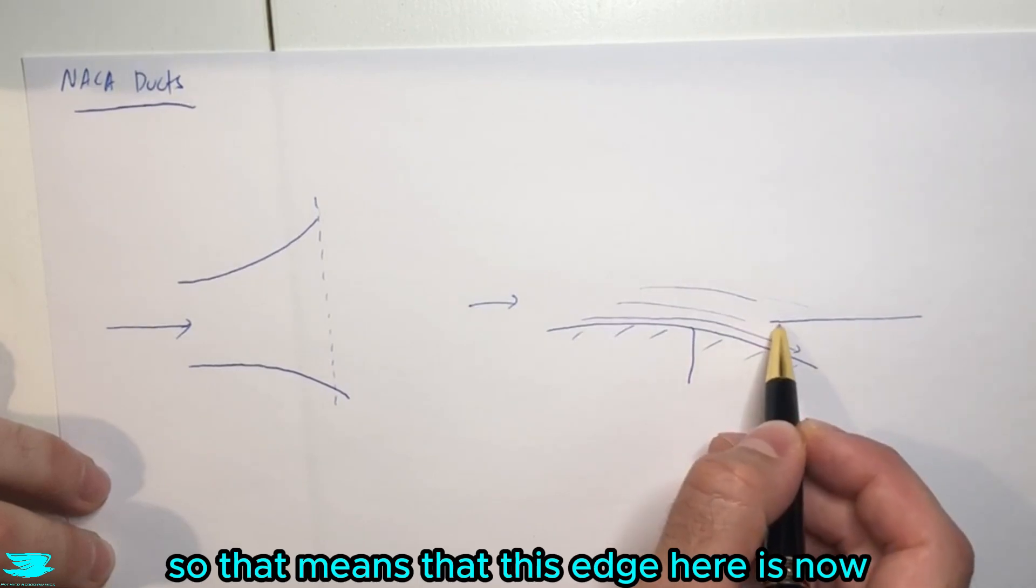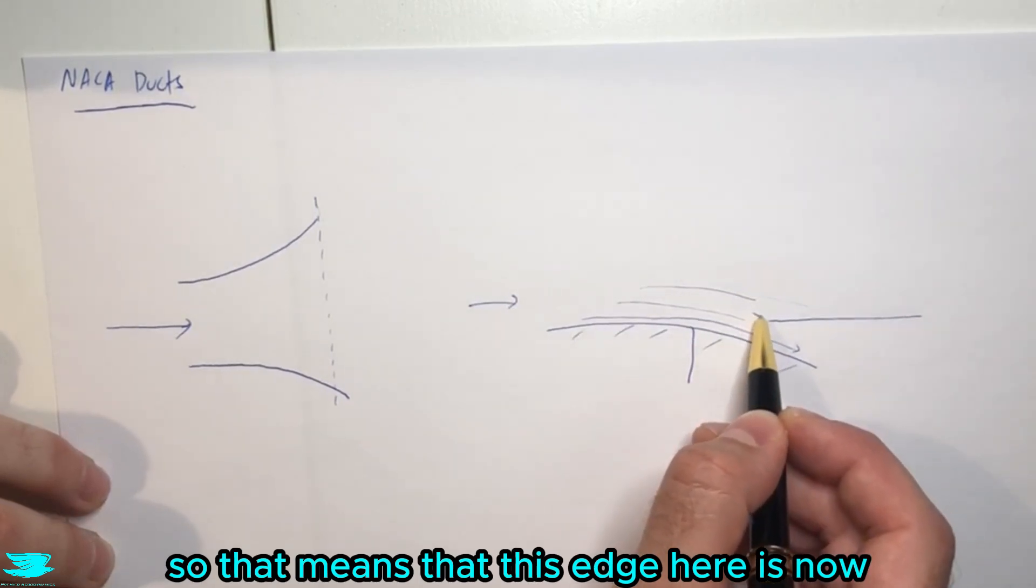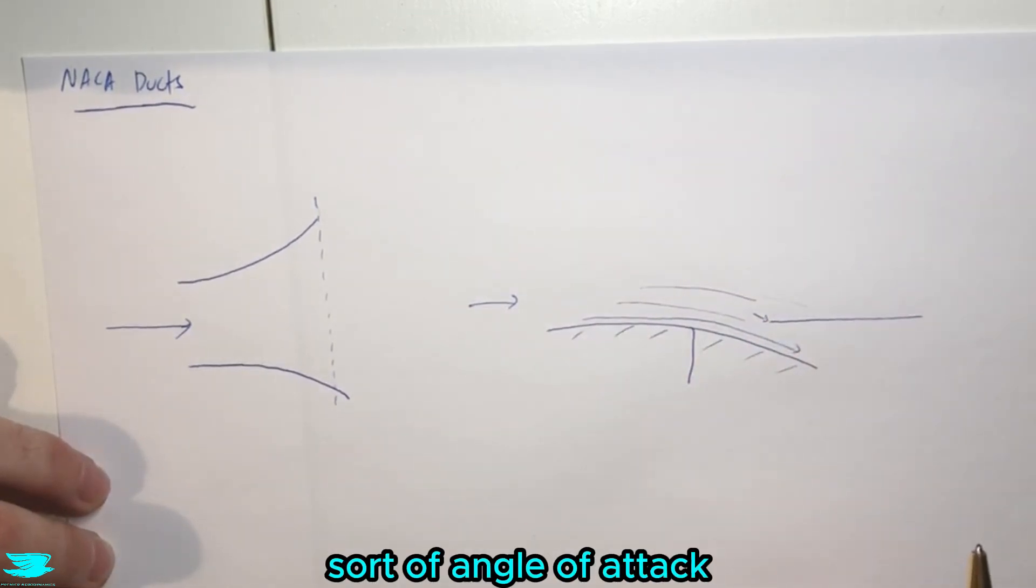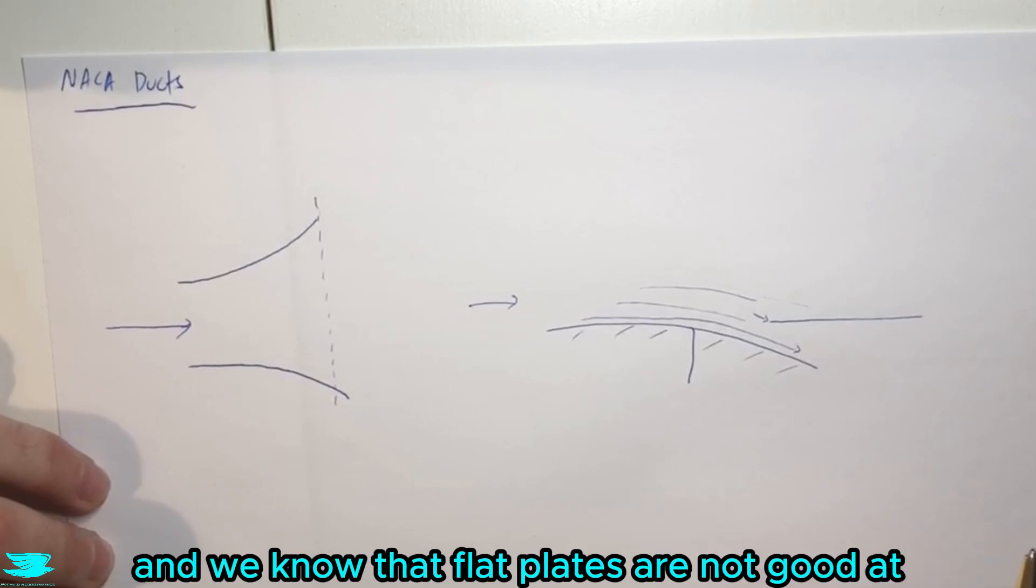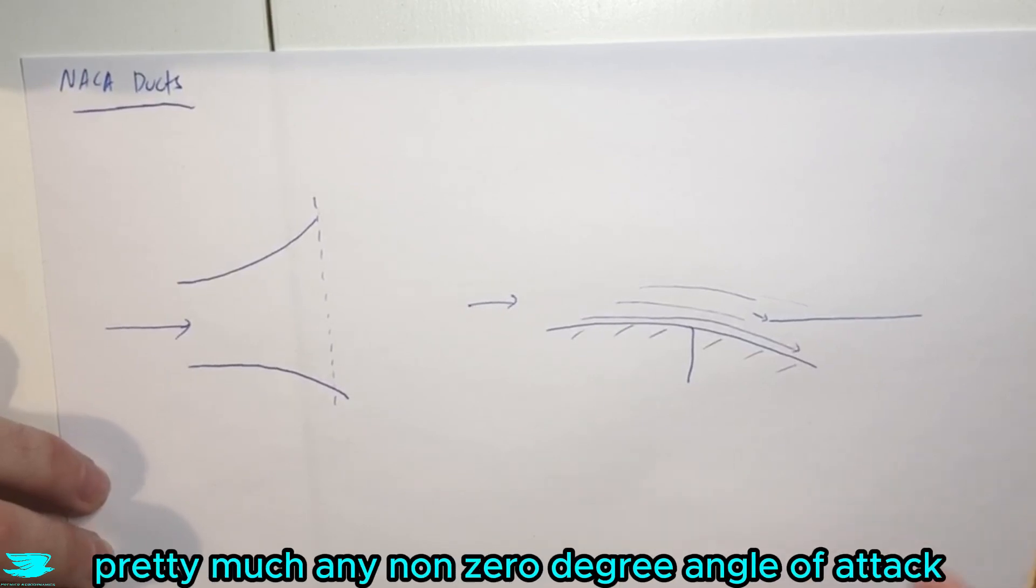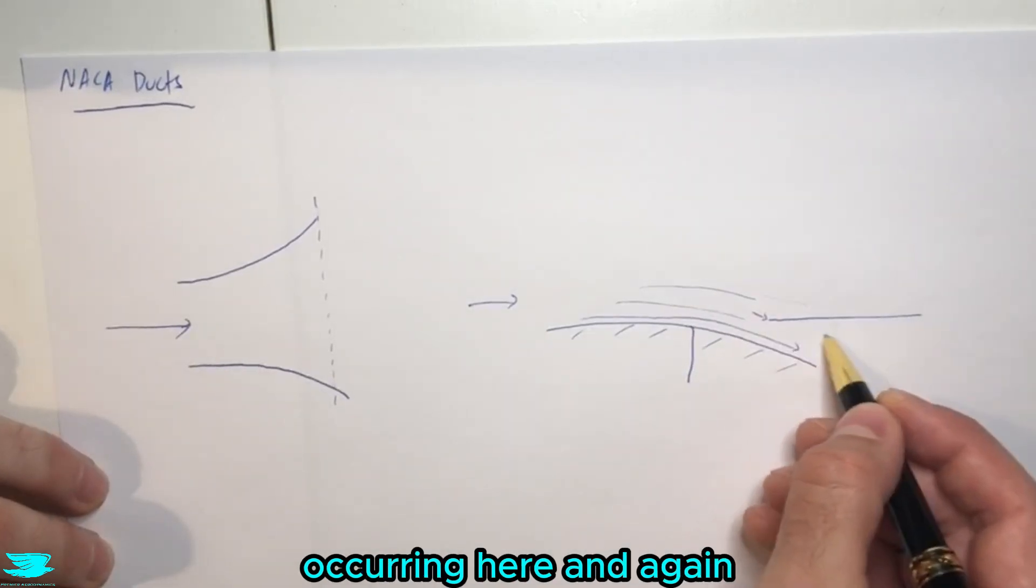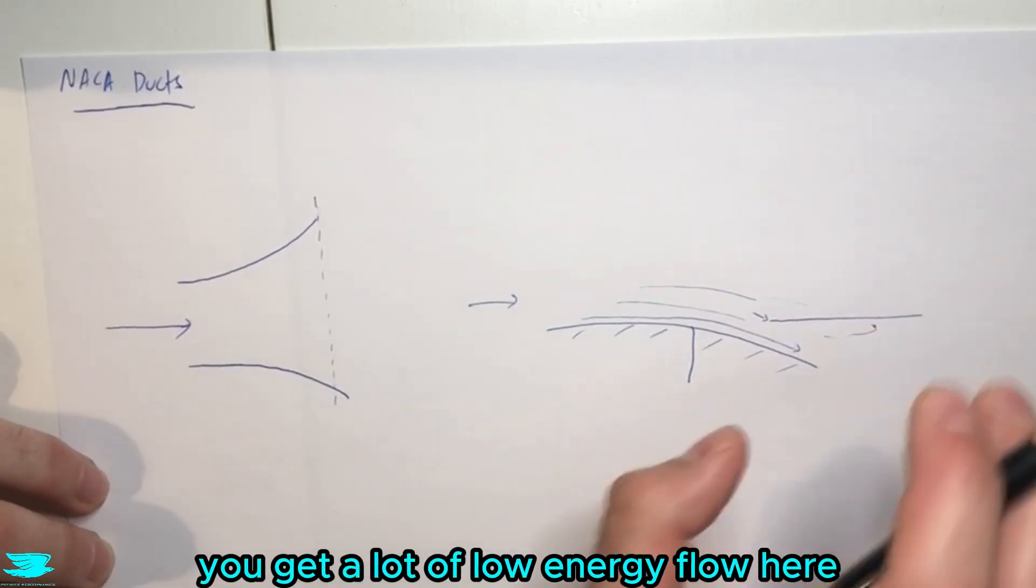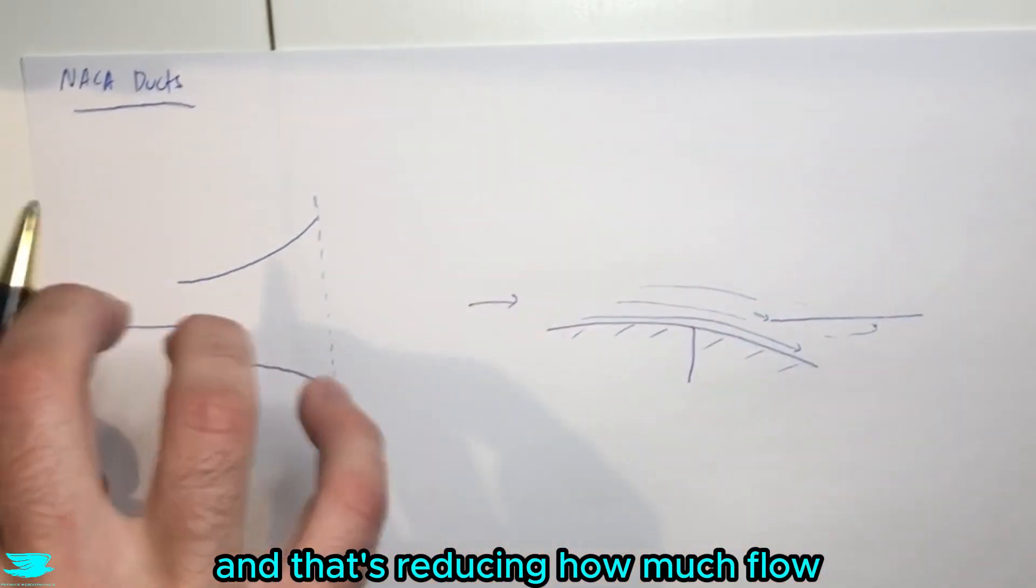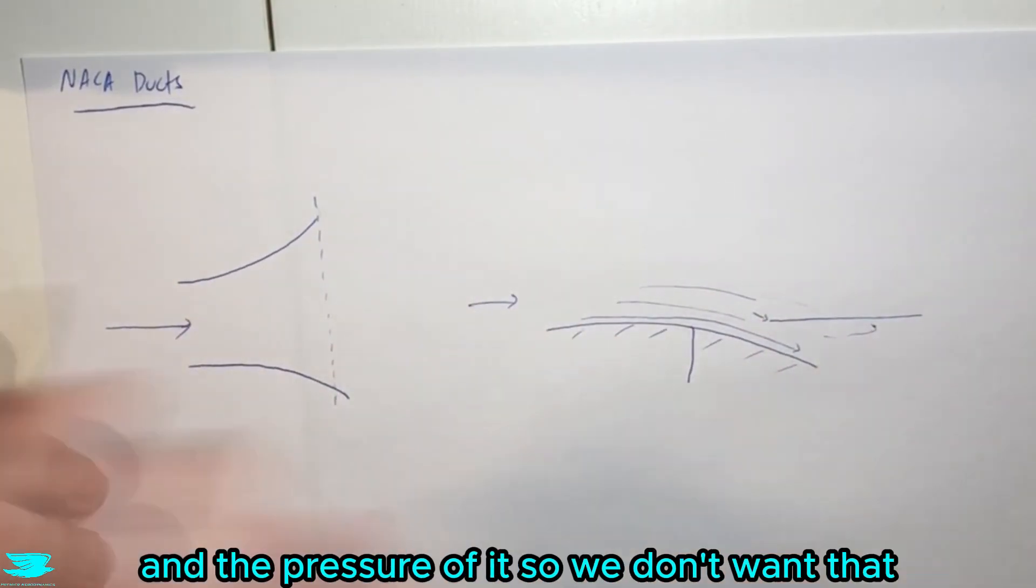So that means that this edge here is now being exposed to some sort of angle of attack. And we know that flat plates are not good at pretty much any non-zero degree angle of attack, like above one or two degrees, they'll start to stall. So you get massive stall occurring here. And again, you get a lot of low energy flow here. And that's reducing how much flow you're coming into the engine and the pressure of it.